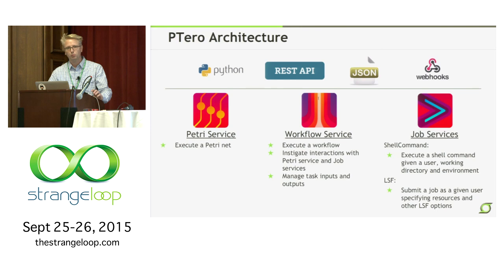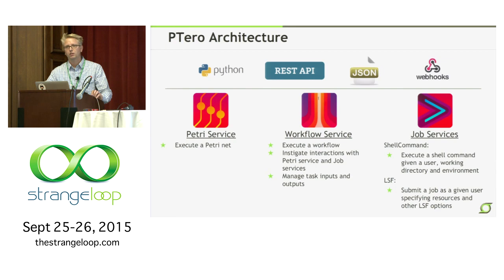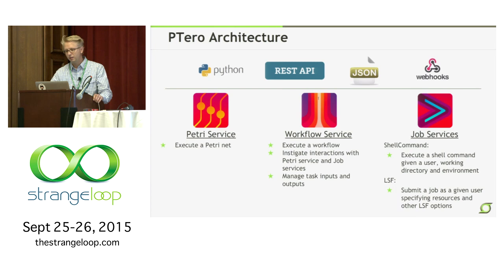The third kind of service is the job service. Right now we have two varieties: the shell command job service, which allows you to execute a command on some execution host, and the LSF job service, which dispatches commands to our data center using IBM's Platform LSF. The services also have a few things in common: they are all written in Python, expose REST APIs, and requests accept and respond with JSON documents. If you post a JSON document to one of the Tero services, it validates that JSON using JSON Schema. All services have webhooks that users can subscribe to so they can listen for events.